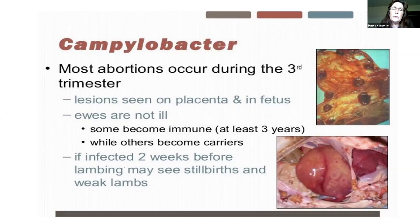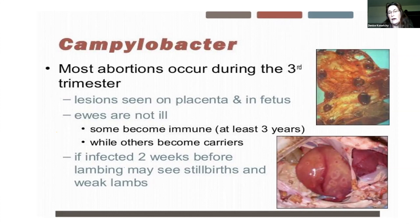We can also see carrier ewes with this disease. Once an animal has had an abortion associated with Campylobacter, they will develop immunity against it that generally will protect them for roughly about three years. But some become carriers and can continue to shed the organism, perpetuating it in your flock or herd. One picture shows the liver of a fetus aborted because of Campylobacter — it shows little targeted lesions on the liver, which is a pathognomonic sign of Campylobacter. If your veterinarian sees that at necropsy, that's a pretty good indication of what caused the abortion.